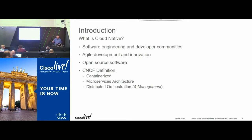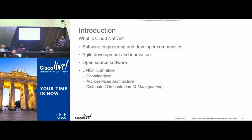A big part of this is taking software engineering principles like agile development and putting them into practice in day-to-day deployment of applications into production. Open source has played a very big role in this as well, because the speed of innovation businesses need today means you can't go to a big vendor and buy a software package and then wait six to nine months for changes — by then you've missed your window of opportunity. The Cloud Native Computing Foundation defines cloud native as containerized, with microservices architecture, distributed in nature, and distributed orchestration. I'd add distributed management, because you can't just orchestrate without managing the changes around that.